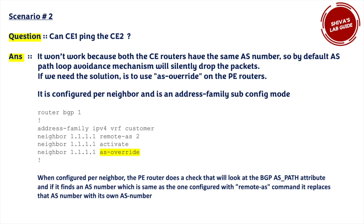If you need a solution where all CE routers use the same AS number but packets still need to be forwarded, you have to use the 'as-override' command on the PE routers. Under the PE router, under that VRF, for that specific neighbor — configure the remote AS with the CE's AS number and activate it, then add 'as-override'. What happens is the PE router checks the BGP AS path attribute and if it finds an AS number matching the configured remote AS, it replaces that AS number with its own AS number, so the receiving CE router will not drop the packet.